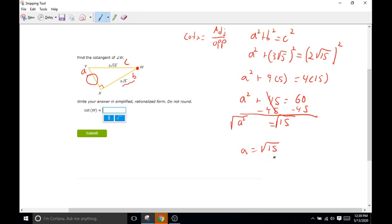Can we factor down 15 anymore under the square root? We cannot. 15 is three times five, which are prime numbers. You cannot break those down any further. So we're going to leave it as the square root of 15. So that is going to be A.